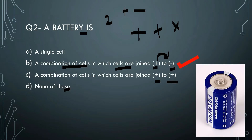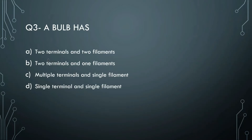Next question: what does a bulb have? The options are: two terminals and two filaments, two terminals and one filament, or multiple terminals and single filament. The right answer is B - two terminals and one filament. A bulb has one plus terminal and one minus terminal, meaning two terminals, and one filament.